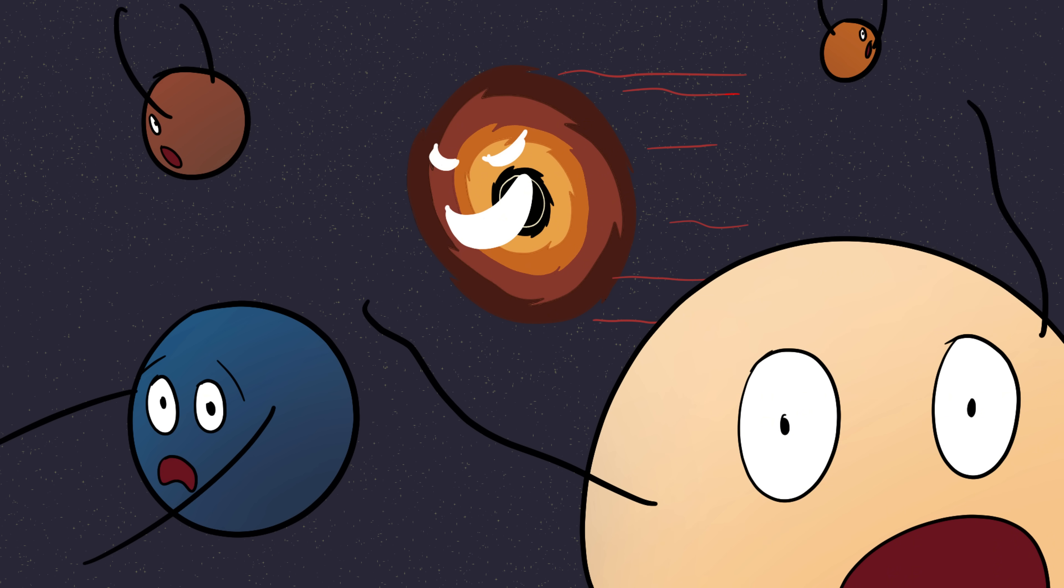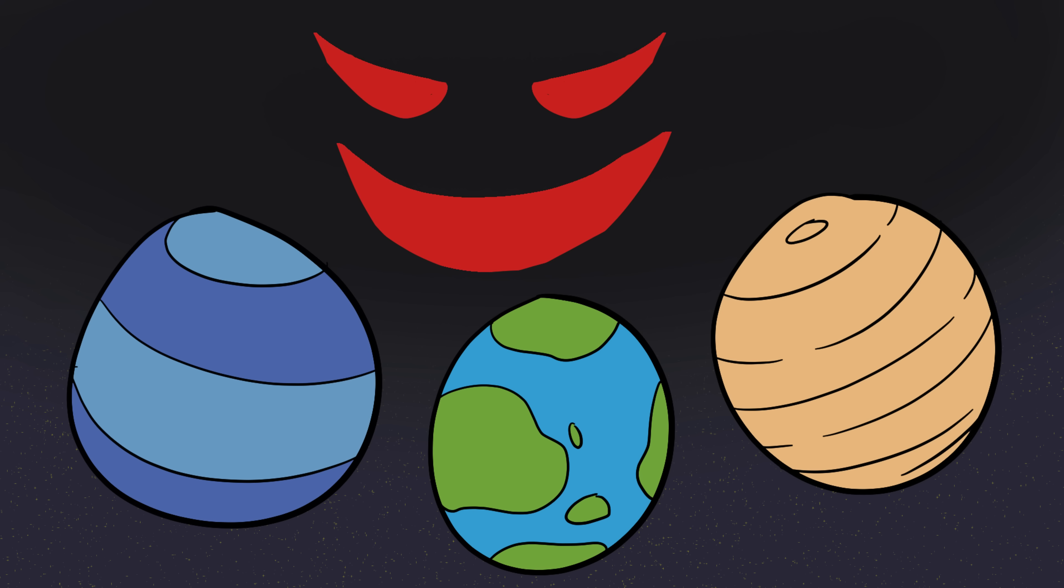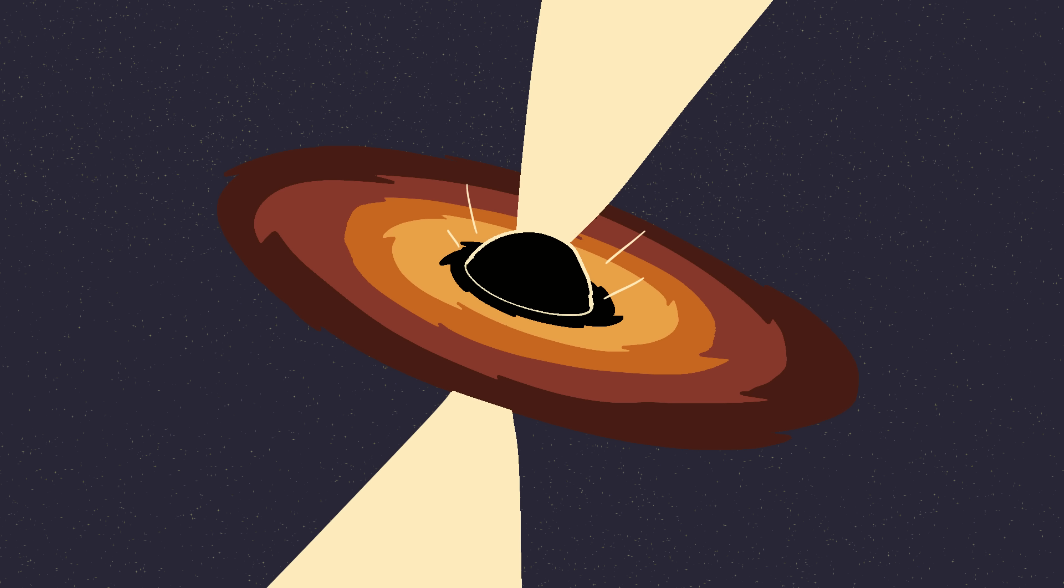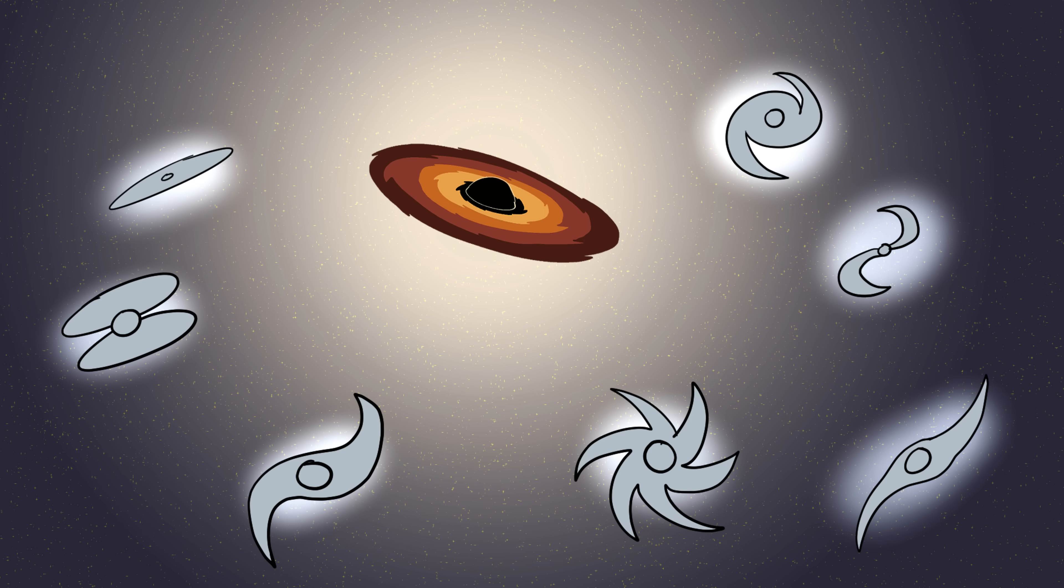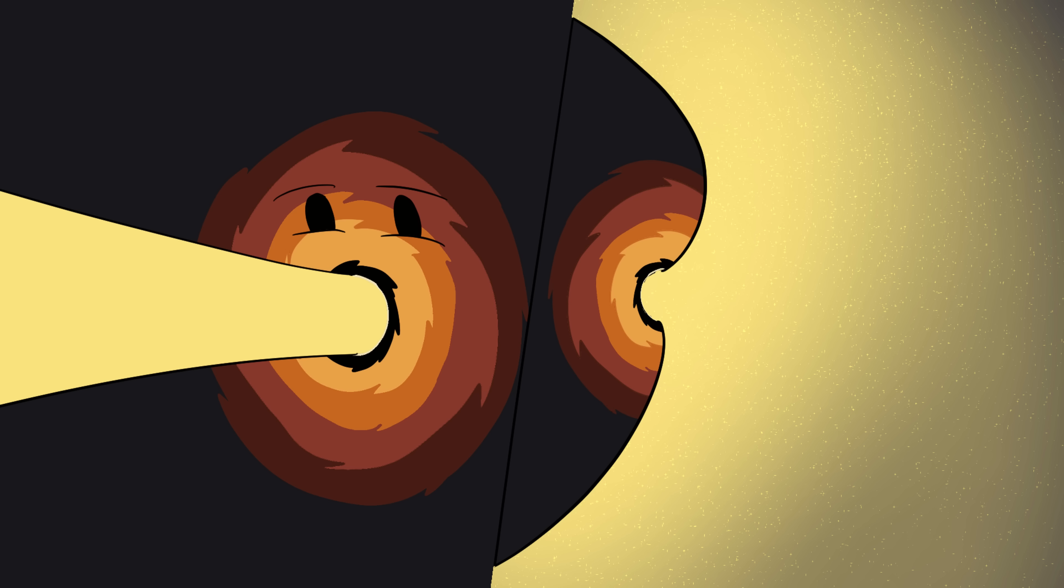But the real nightmare fuel is that black holes don't just sit there, they move. Some are wandering through space like invisible predators, silently drifting until something like a star or an unlucky planet like ours wanders too close, and they don't just eat quietly either. When a black hole consumes matter, it can blast out jets of radiation so bright they outshine entire galaxies. Imagine something that can swallow light and vomit it back out ten times stronger.